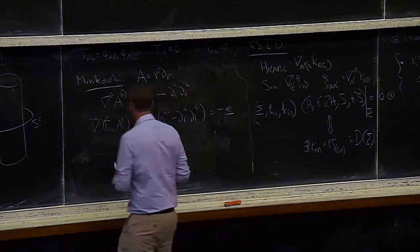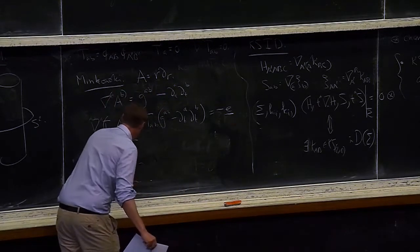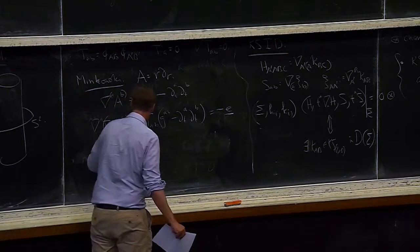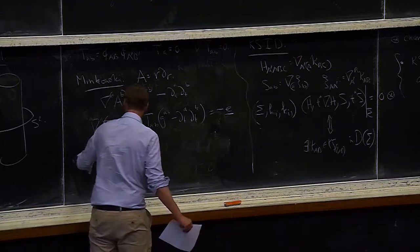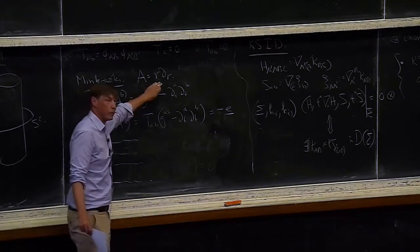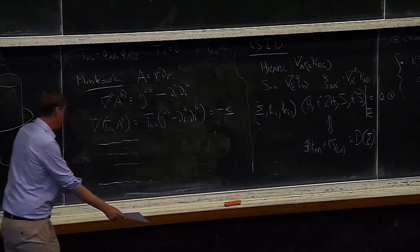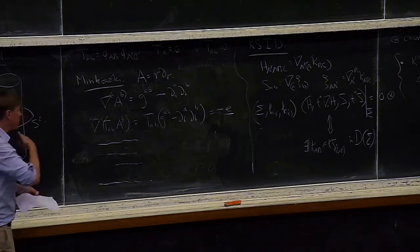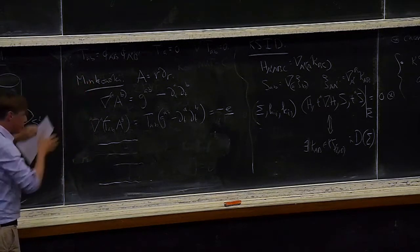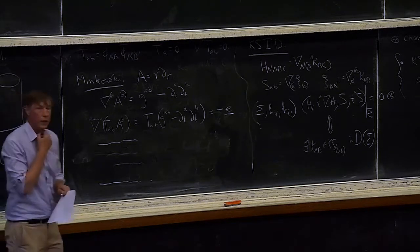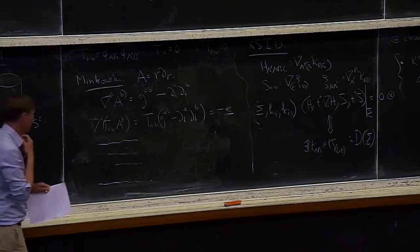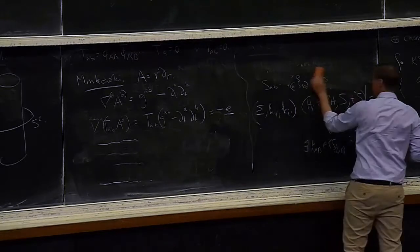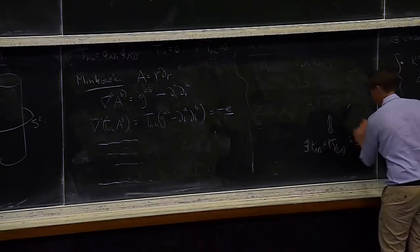We can use Gauss's formula to relate the energy on the initial and final slices to the time-integrated energy in between. Ignoring boundary conditions and the growth of the vector field, this tells you that in stationary regions the energy density has to go to zero as we move forward in time. This expresses the dispersion of the Maxwell field in Minkowski.